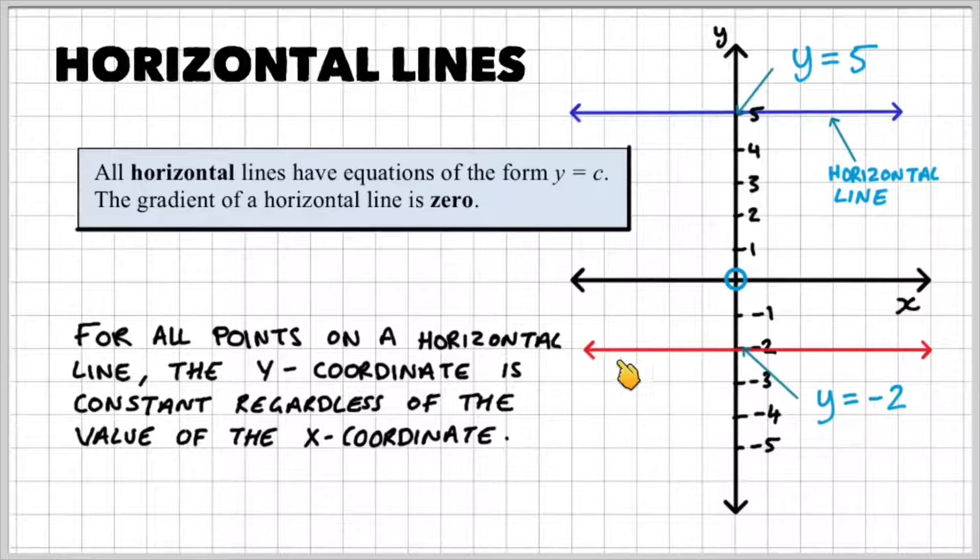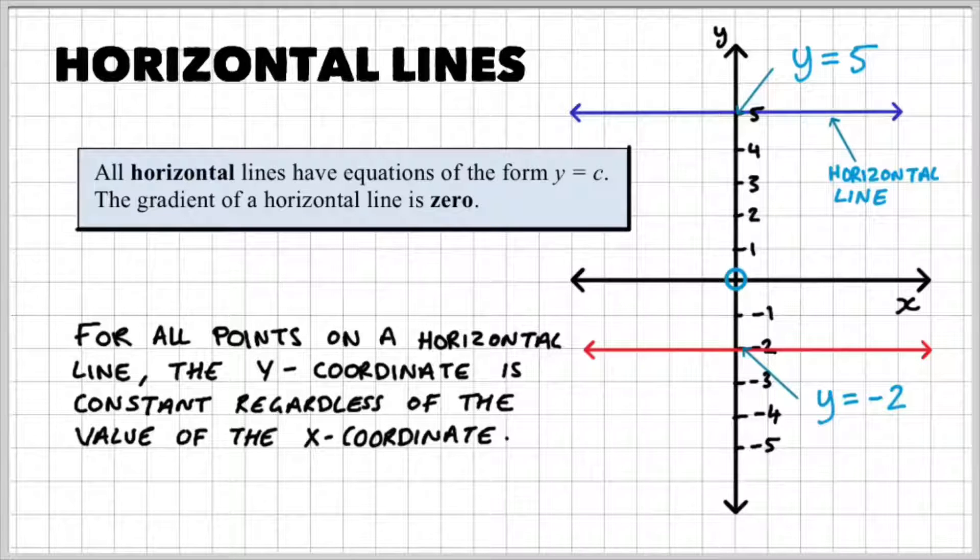So here's another example. We have a horizontal line, and it passes through the point where y is equal to negative 2. So again, regardless of whatever the x-coordinate is, y always passes through negative 2.